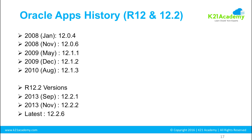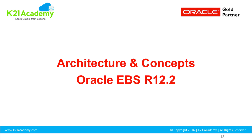Our training is going to be focused on version 12.2.5. There's not much change between 12.2.5 and 12.2.6 from a DBA's point of view — it's more or less the same. Some added functionality exists but is more applicable to functional consultants. From an Application DBA point of view, things are more or less the same between 12.2.5 and 12.2.6. So let's begin with architecture and concepts in 12.2.